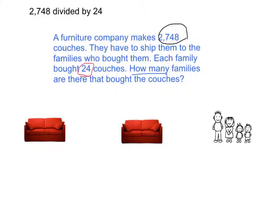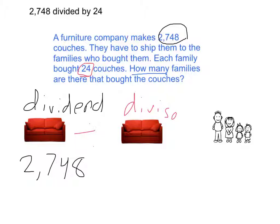Our problem first introduces us to 2,748, which is our dividend. Our dividend is the first number because it's larger, which you divide. In this case, our dividend is 2,748, and that is the number that we divide. We divide our dividend by our divisor. In this case, our divisor is 24.